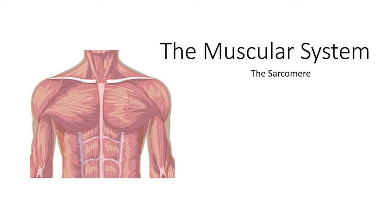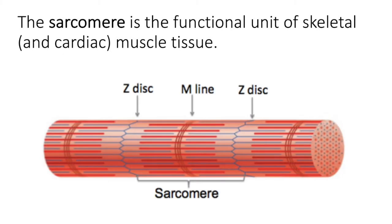Let's look more closely at the sarcomere. The sarcomere is made up of a thick red line down the middle and two zigzaggy looking lines on either side. That is how we define the sarcomere. The sarcomere extends from that blue zigzag line — called the z-disc — to the next z-disc, and in between you have those overlapping fibers. At the middle or the midline is the m-line.